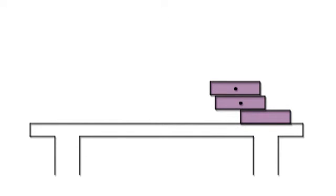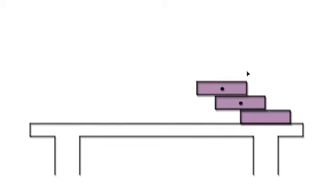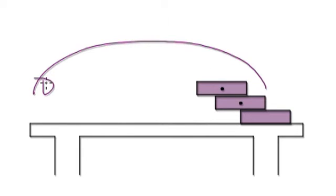But then comes the third brick. If you place the third brick too far to the left, you can see it's going to topple. So the question is: is it possible to build a bridge from one end of the table all the way across to the other end?